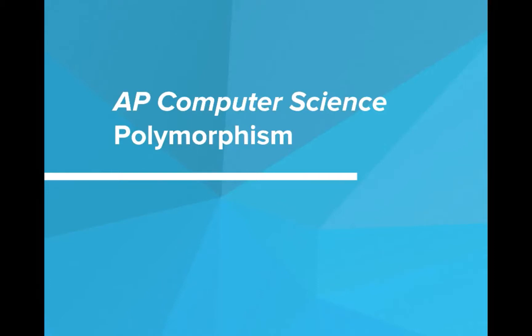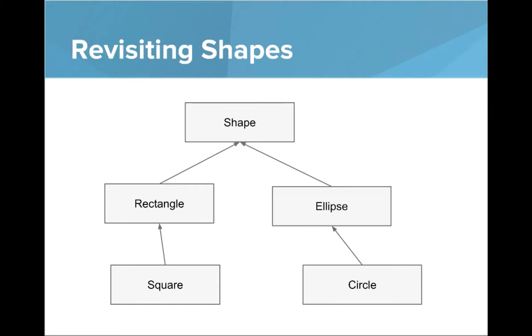Hi, in this video we're going to talk about polymorphism. So let's revisit our shapes hierarchy from earlier. Here you can see we have the shape class up at the top and then rectangle and ellipse, those were subclasses, and square and circle, those were also subclasses. So this was our shape class hierarchy.